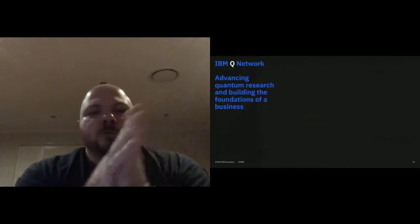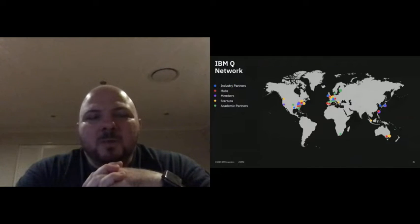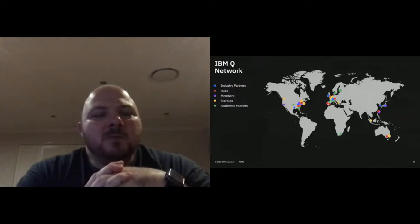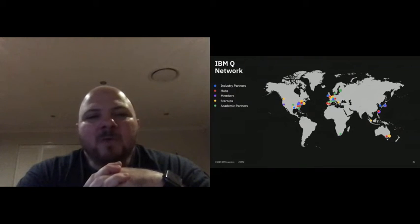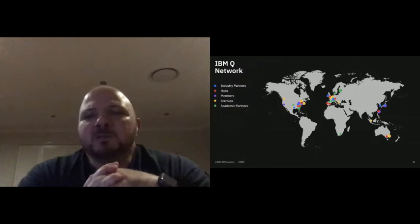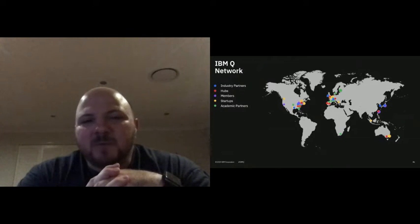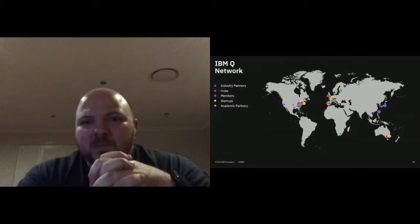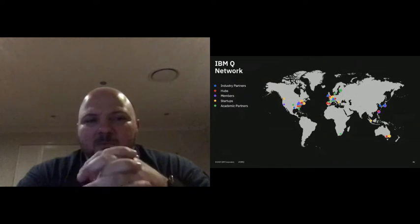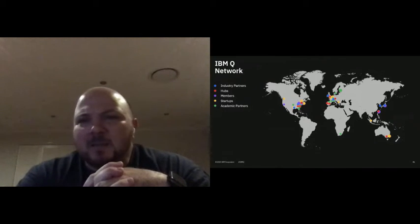The Q Network — IBM created this Q Network with different areas and a few hubs around the world. Melbourne University is the hub in Australia. You can become a partner through the hubs — we have industry partners, and a place like Melbourne Uni is the hub, with members working with the hubs and startups. They work very closely with our IBM research lab in Melbourne.